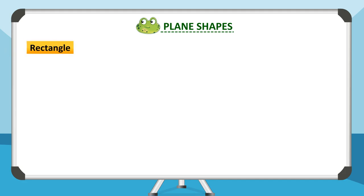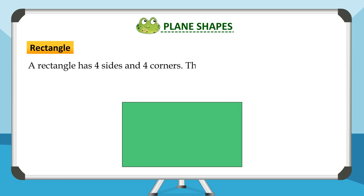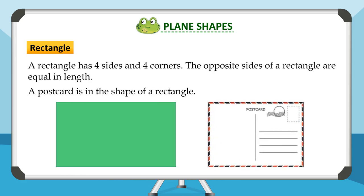A rectangle has four sides and four corners. The opposite sides of a rectangle are equal in length. A postcard is in the shape of a rectangle.